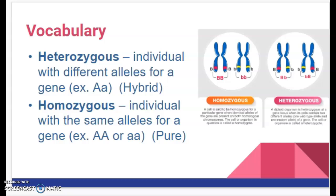Some other terms are heterozygous and homozygous. Heterozygous, also known as hybrid, means you've got two different alleles for a particular gene. It's often referred to as one big letter and one little letter — one dominant and one recessive. You've got two copies of a gene and they are different.